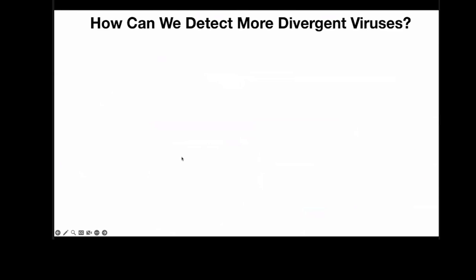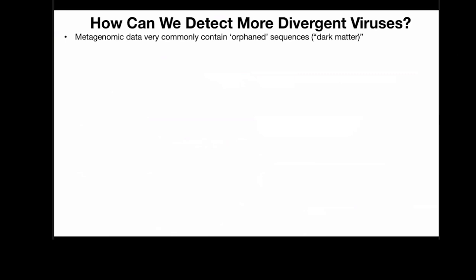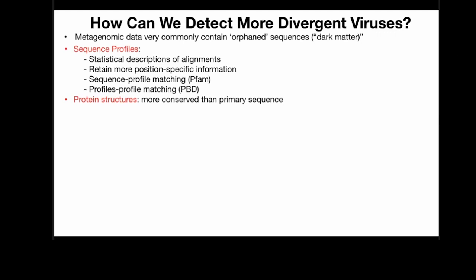My key question is: is there more? Is the current limit the end of the virus sphere, or are there more divergent viruses out there? The problem is that if you sequence any dataset — do metagenomics on any sample set, particularly aquatic environmental samples — you see lots of sequences that match nothing. We call them orphaned sequences or dark matter. They could be viruses — they're often contigs a few thousand base pairs long, they match nothing. Could they be viruses? How do we determine whether these sequences are viruses, and are they more divergent than what we currently detect?